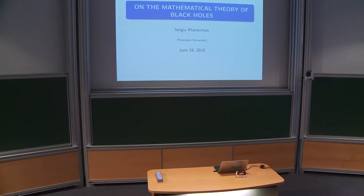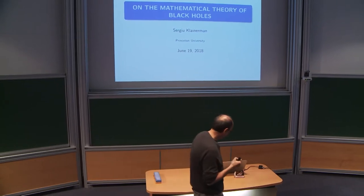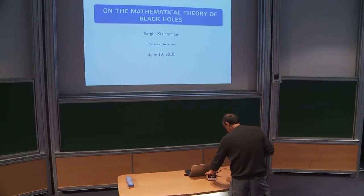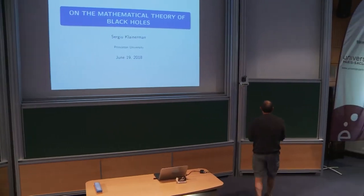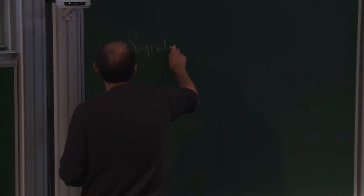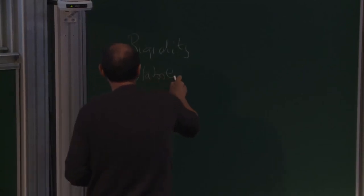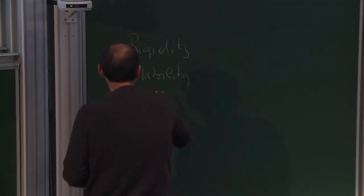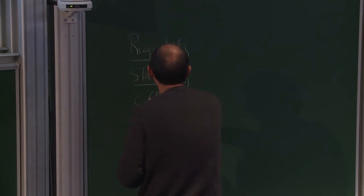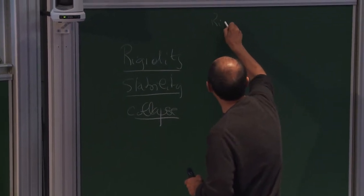This is the third lecture on the Mathematical Survey of Black Holes. I discussed the so-called tests of reality for black holes, which were rigidity, stability, and collapse. These are all statements about the Einstein equations in vacuum.